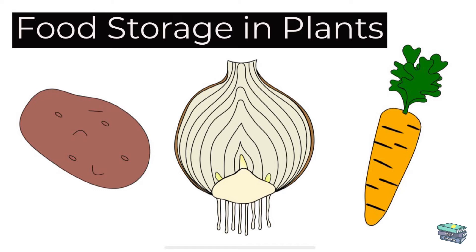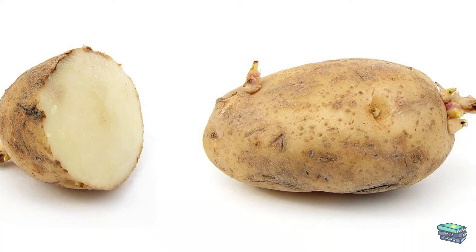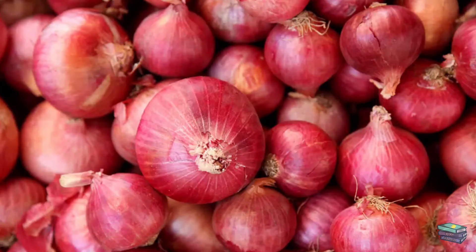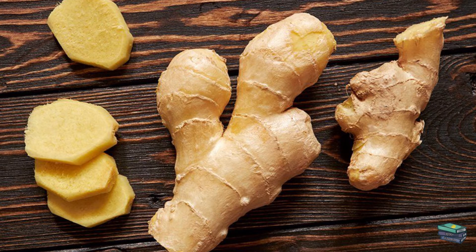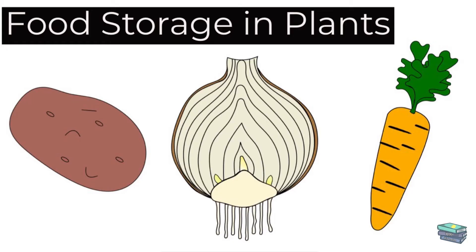Next we see food storage. There are small tubes inside the stem that help to carry these things to different parts of a plant. Some stems like potato, onion, ginger, and garlic grow into the ground. Such stems store food for the plant.